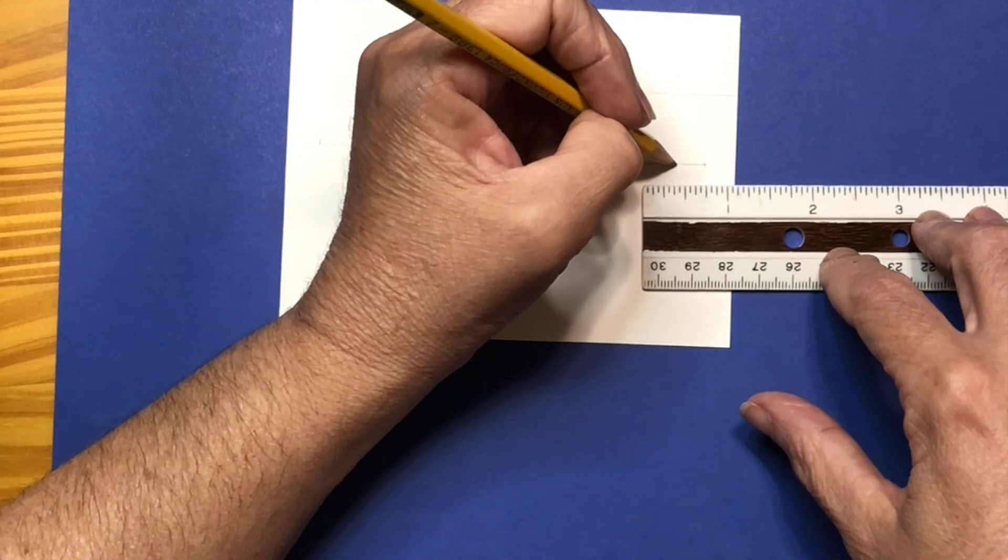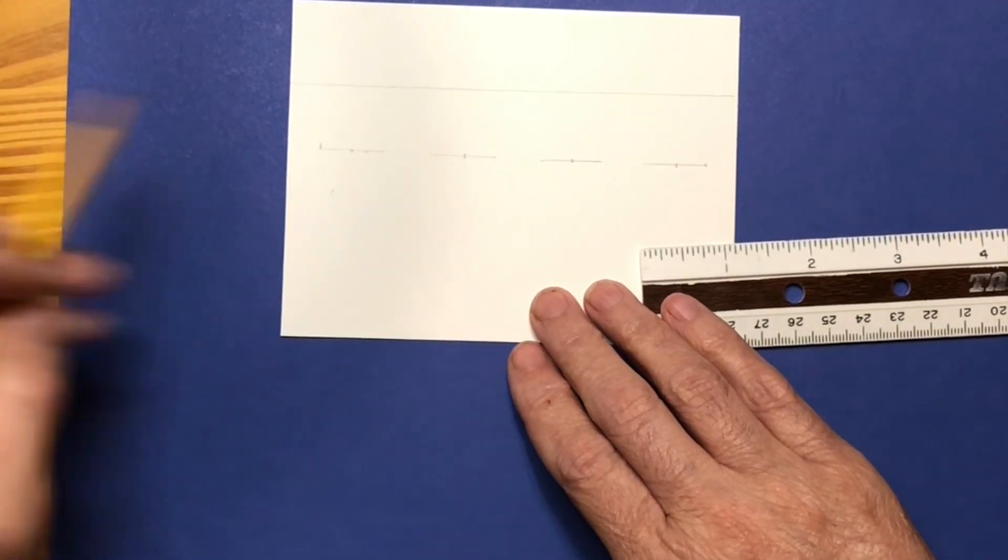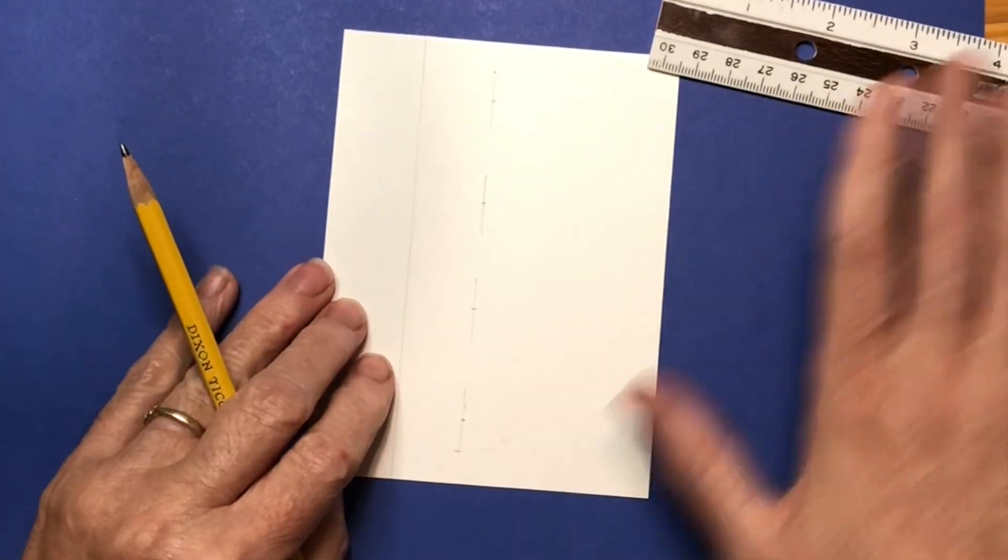But it's fun math. So that's important to just know the centers. We won't be marking those with the Copic, but that's when we go down. That's what we want to do. So then for the sides, we're going to go down three quarters.